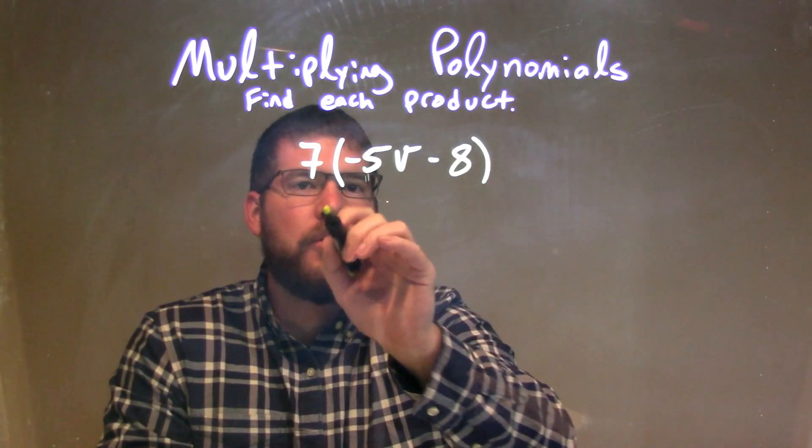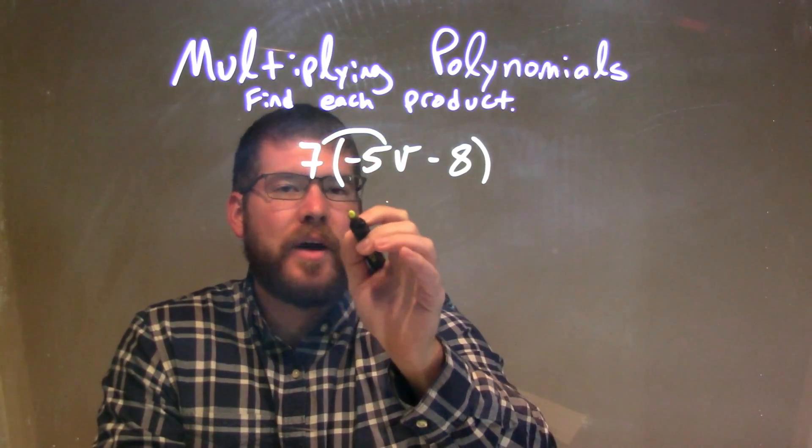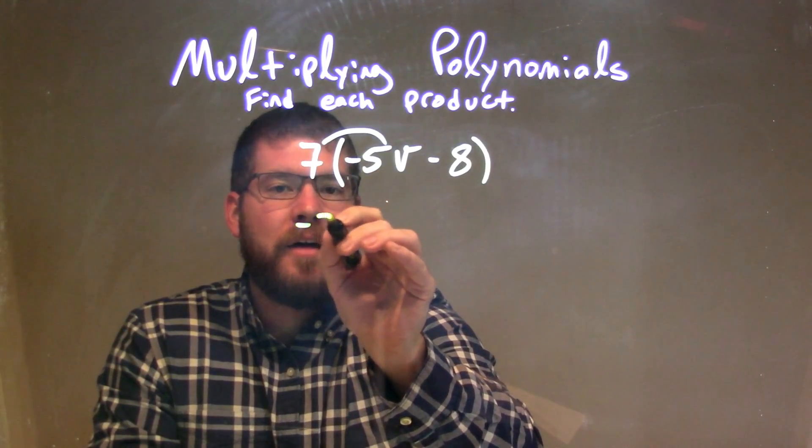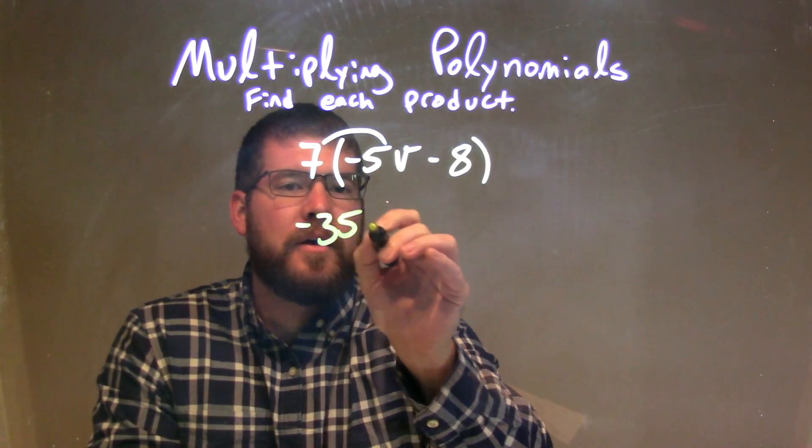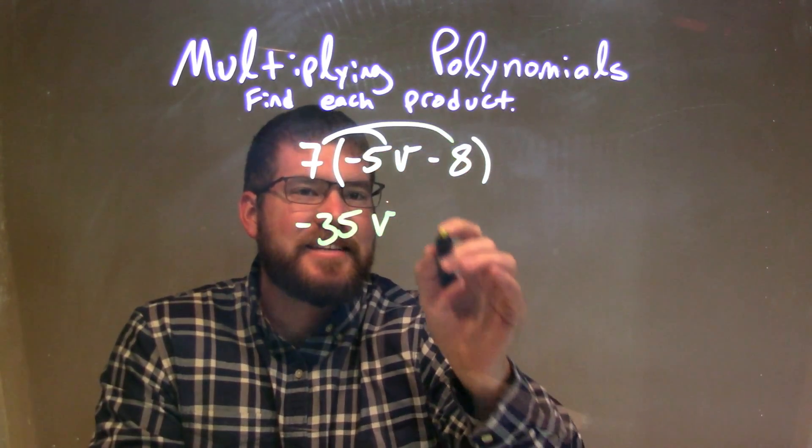We want to distribute that 7 to both parts when we multiply. So we're going to take 7 times negative 5v. 7 times negative 5 is negative 35, so negative 35v minus—well, 7 times 8 is 56.